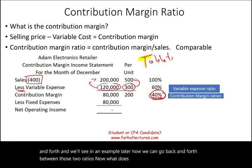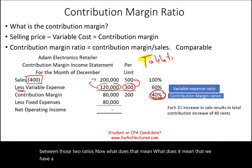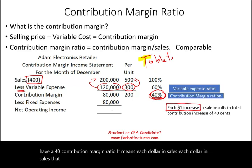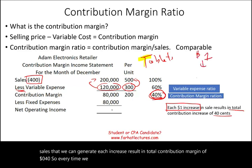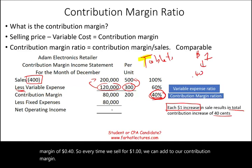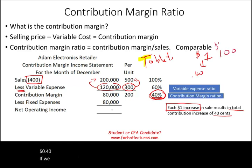What does it mean that we have a 40% contribution margin ratio? It means each dollar in sales that we generate results in a total contribution margin increase of 40 cents. So every time we sell for $1, we can add 40 cents to our contribution margin. If we sell $100, we can add $40, and so on and so forth.